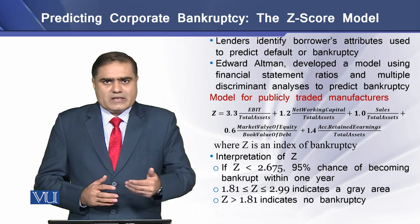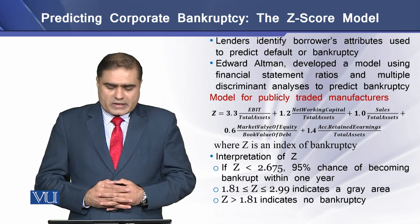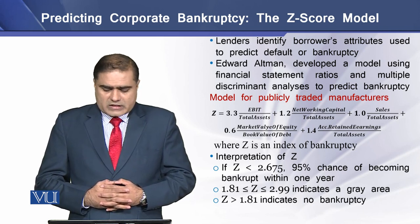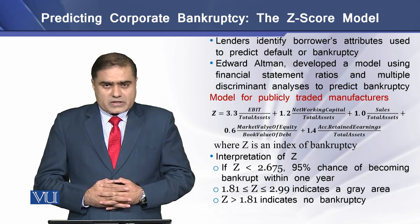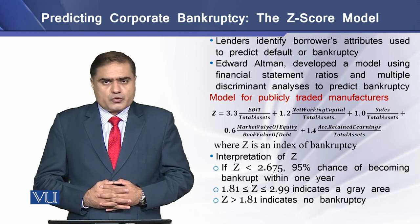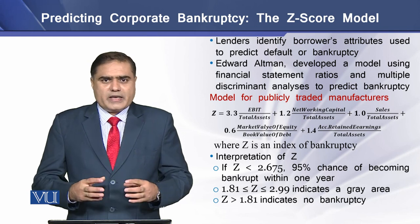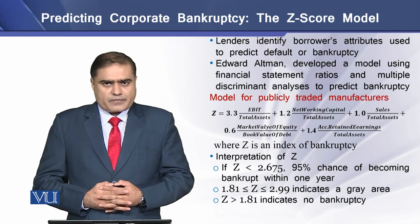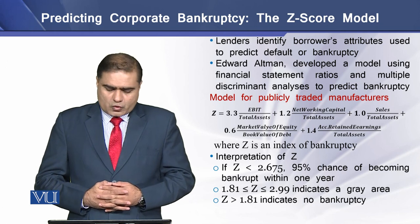What does this Z-score tell you? If the Z-score is less than 2.675, this means there is a 95 percent chance of becoming bankrupt within one year. If the Z-score is between 1.81 and 2.99, this refers to a gray area for the particular firm. And if the Z-score is less than 1.81, this indicates no bankruptcy.